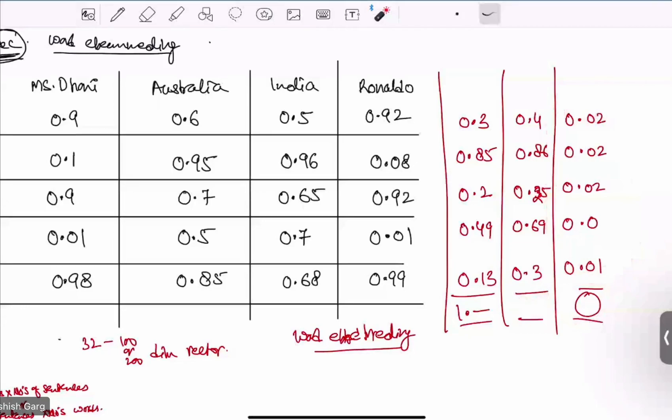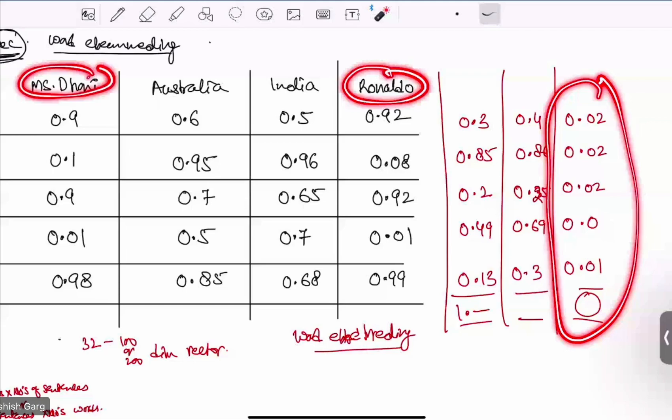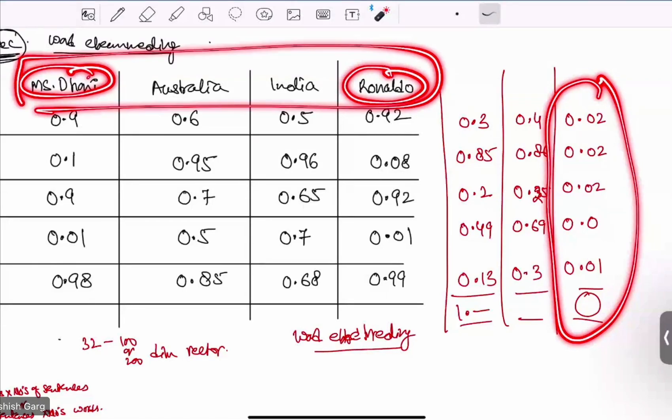So whatever the result we got here is between Ronaldo and MS Dhoni. So out of all these four words, MS Dhoni is most similar to Ronaldo. And you can see that both are sports persons. They need to be of having almost same characteristics.